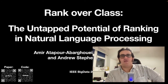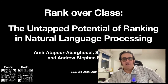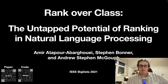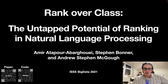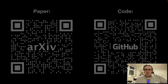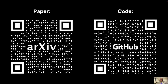My name is Amir and I'm here to speak to you about our paper called 'Rank Over Class: The Untapped Potential of Ranking in Natural Language Processing.' The paper is already available online and you can access the GitHub repository which is linked in the paper, and you can follow the QR code right here.